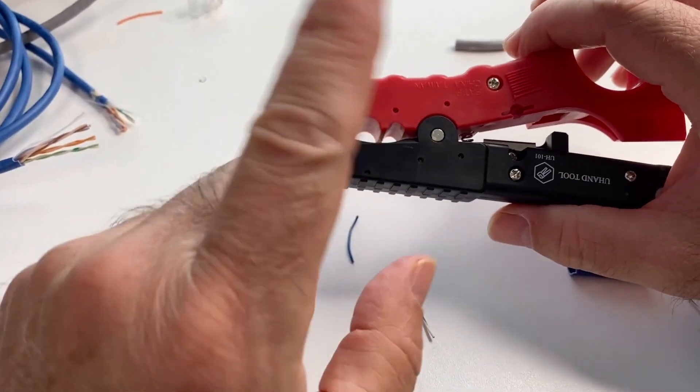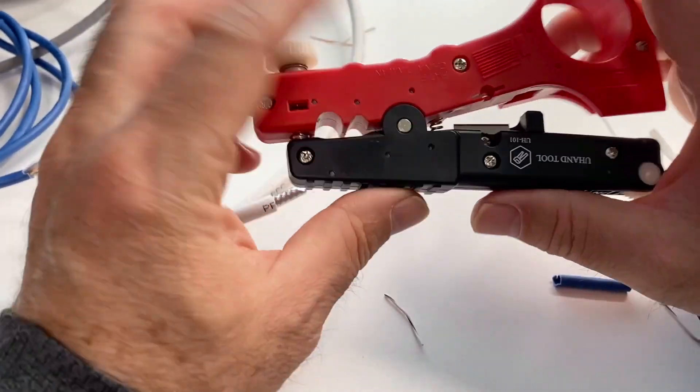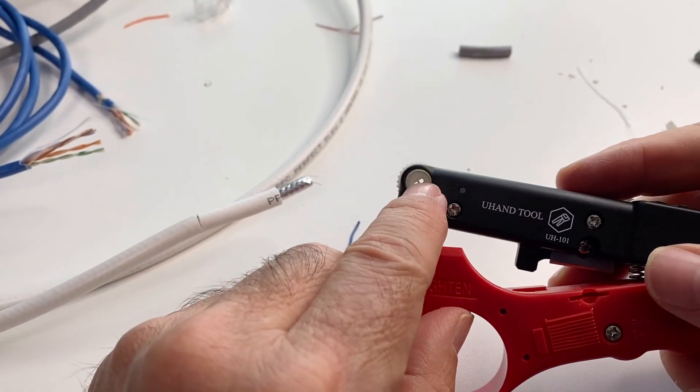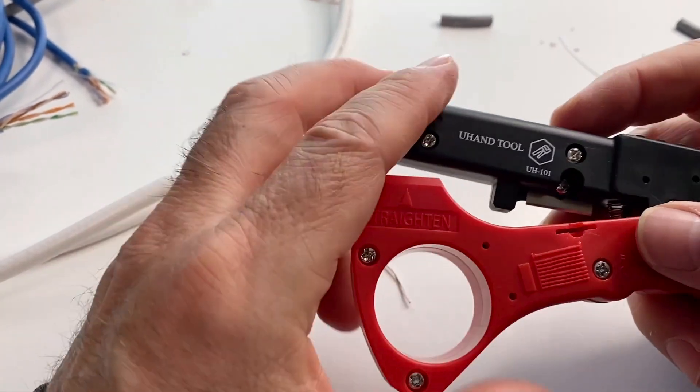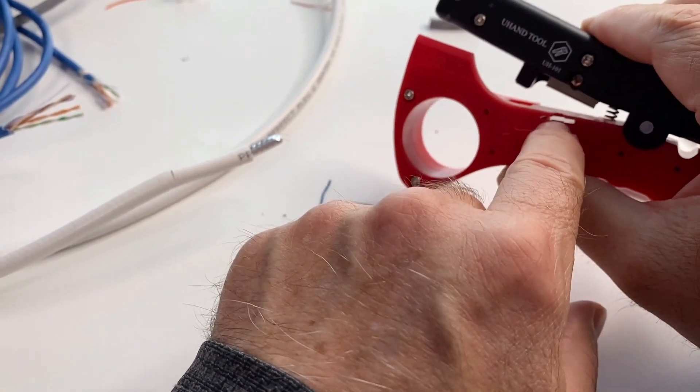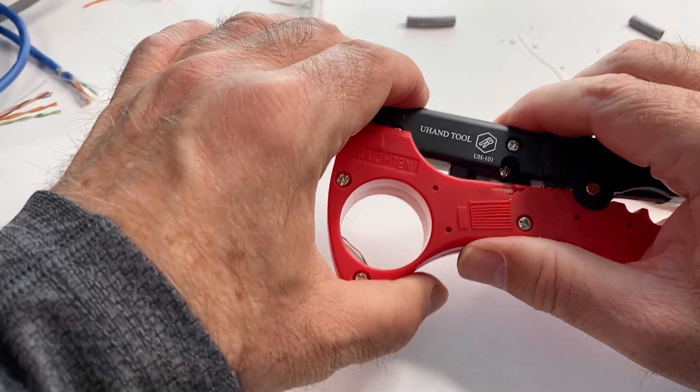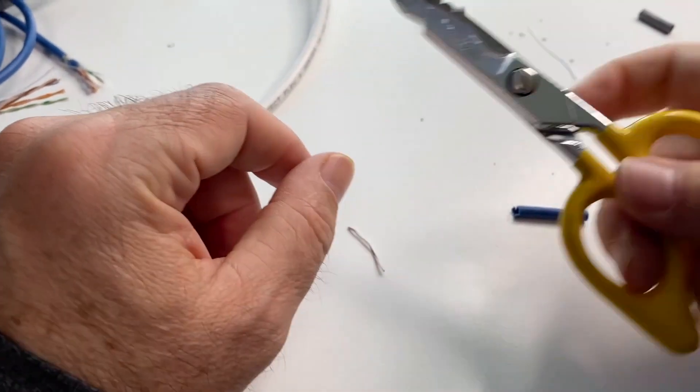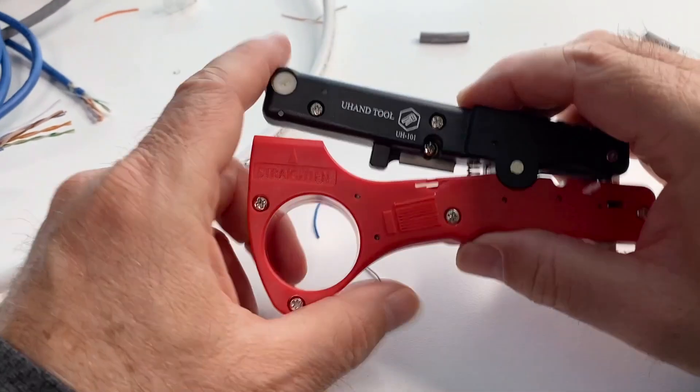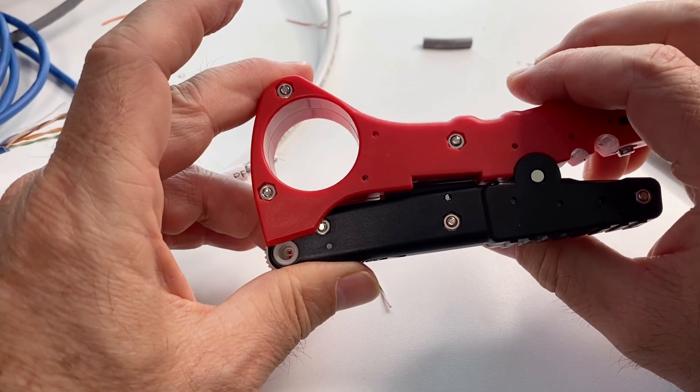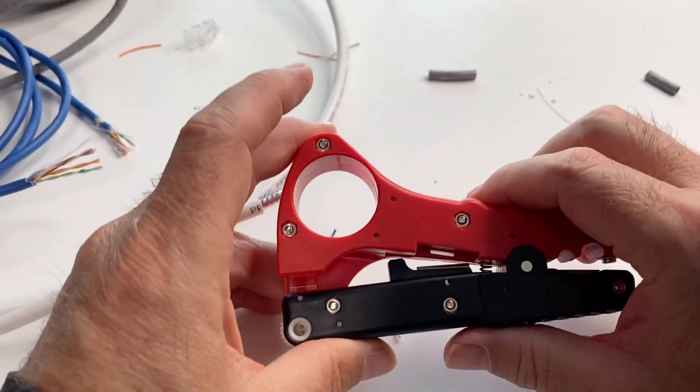So just to recap, you got your jacket stripper and you've got your pair de-twister and straightener, which actually works pretty good. And then there's the little RJ45 plug cutter thing, which I could see you could get used to it. I still probably would just use the scissors cause it's just faster for me. But if you're new in the business, this would probably be good for you. Alright, well I hope that helped you out. Thanks for watching.